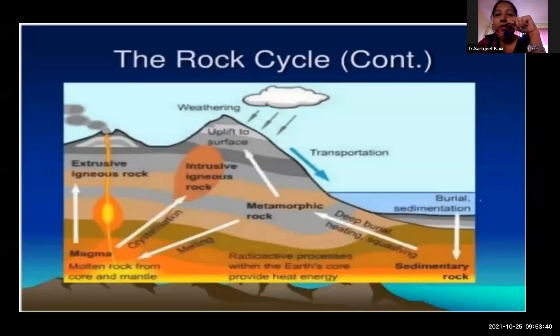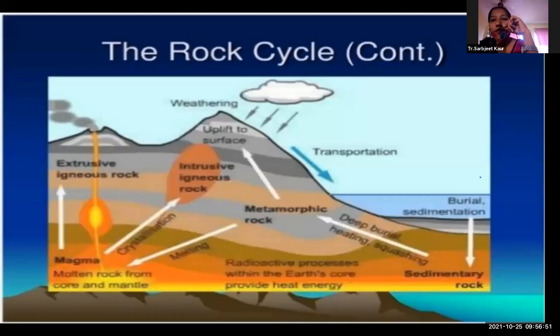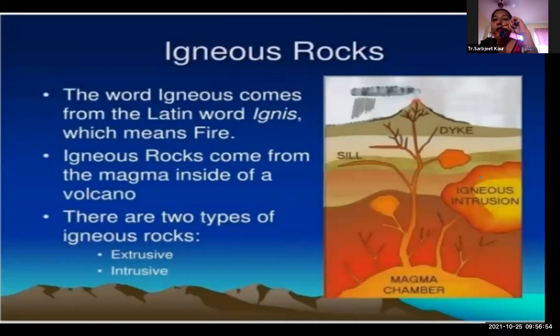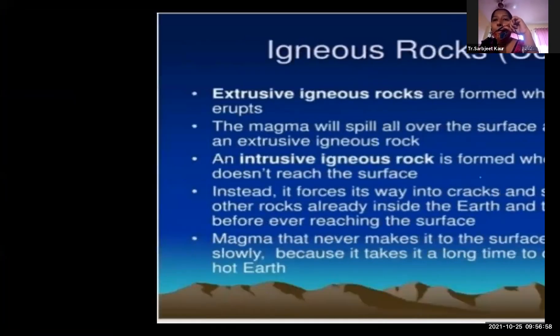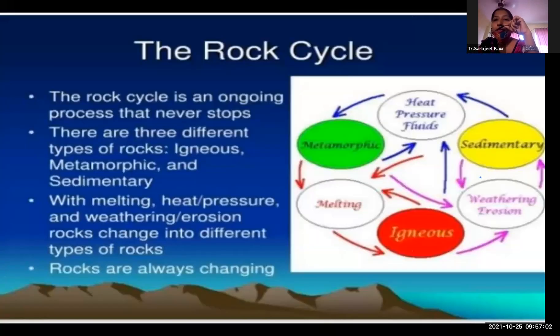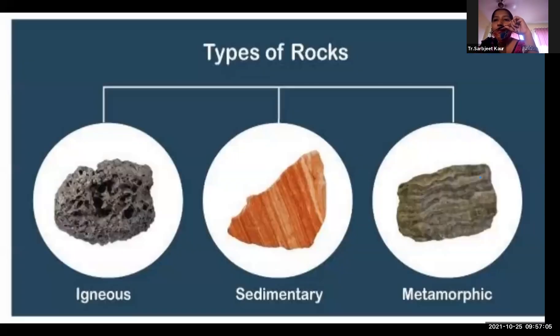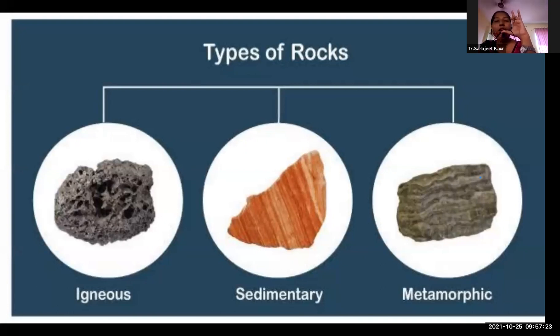When the lava comes out, you can see here — the magma is there. There are three types of rock: the first one is igneous rock, the second one is sedimentary rock, and the third one is metamorphic rock. Today we are going to learn only two: igneous rocks and sedimentary rocks.